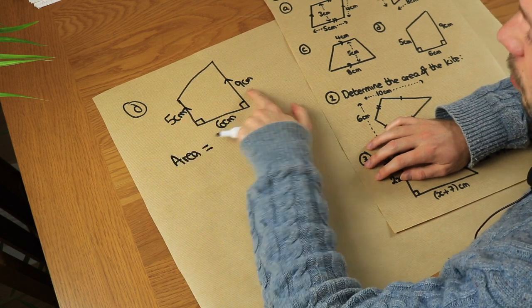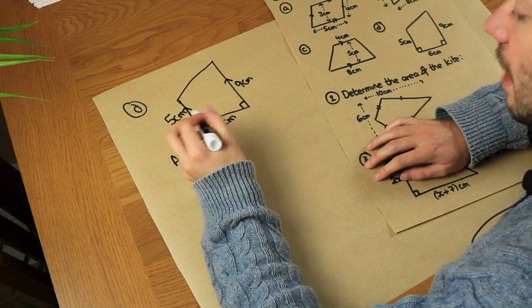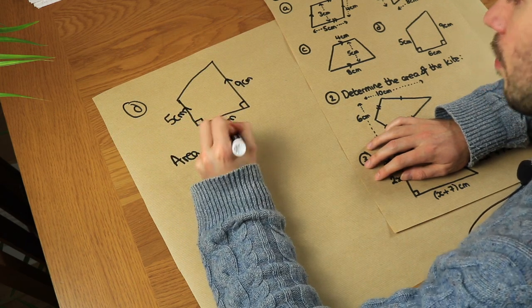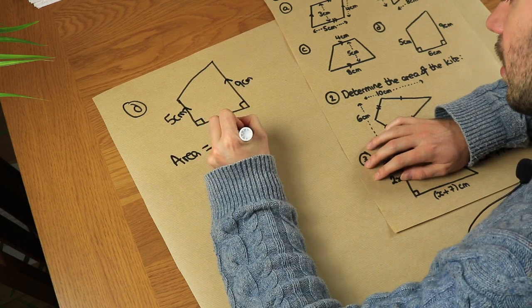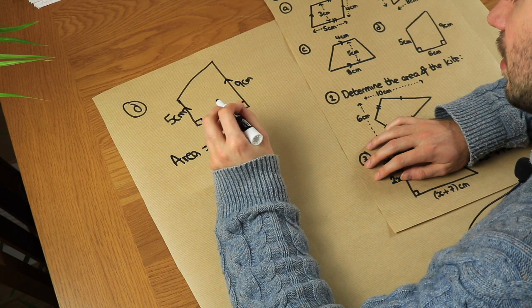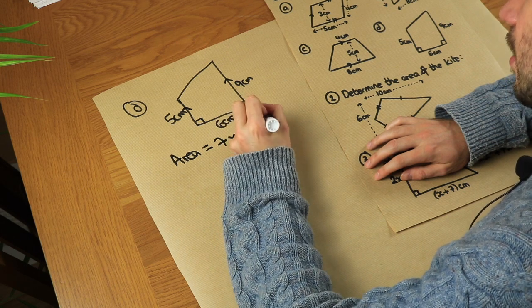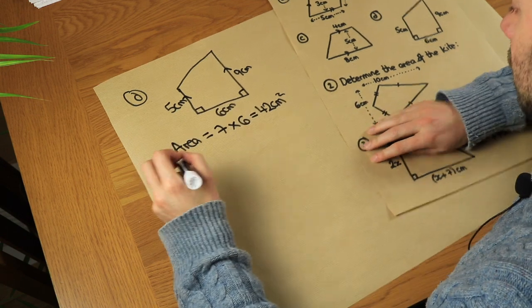Halfway between five and nine is seven, so that's the average of the two, multiplied by the height between them which is six. That gives us 42 centimetres squared.